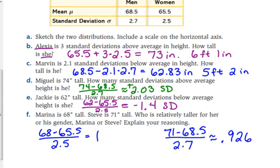So who's taller compared to men or women, Marina or Steve? Unless I did something wrong, I got Marina. Marina is one standard deviation above average compared to women. Steve is not quite one standard deviation. So Marina is taller compared to women.